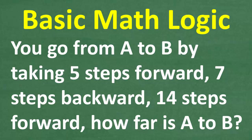You go from point A to point B by taking 5 steps forward, 7 steps backwards, and 14 steps forward. How far is A to B? After these last steps, you arrive to point B. If you can figure this out, go ahead and put your answer into the comment section.